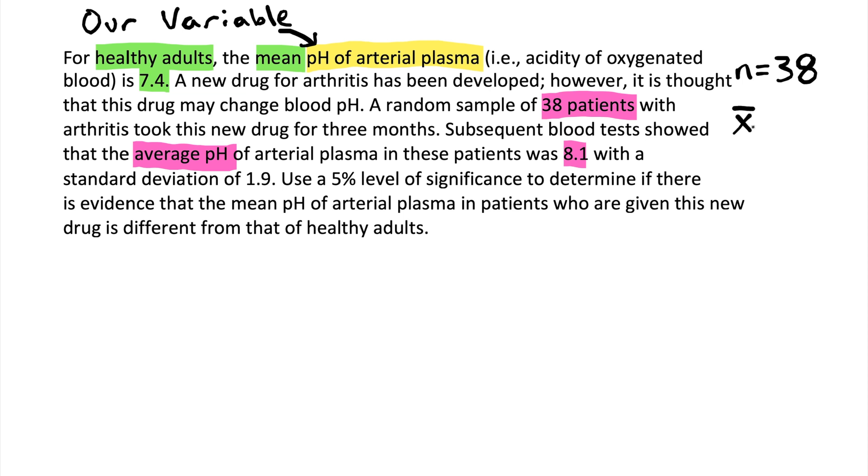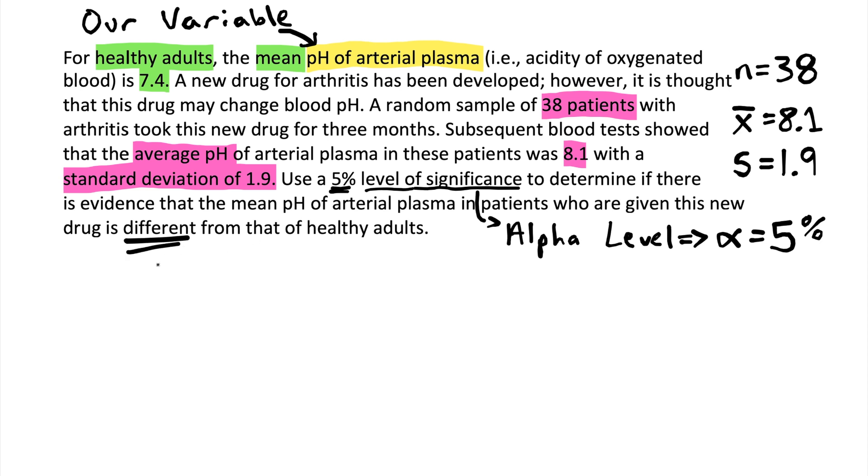And then the sample had blood tests that showed that their average pH was 8.1. That is the average of a sample, which we tend to write as an x with a bar over it. And the standard deviation of this sample was 1.9, which we want to write as a lowercase s. So then it says use a 5% level of significance. That's our alpha level, which we can write as the Greek letter alpha.